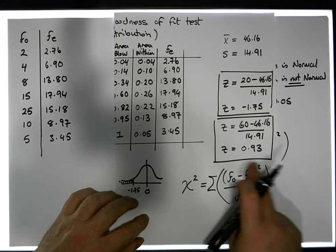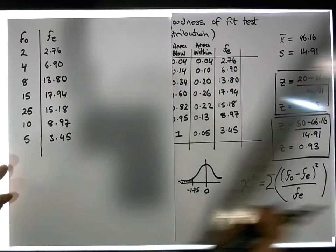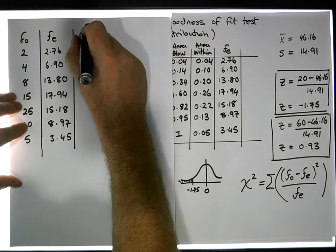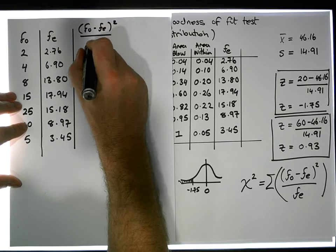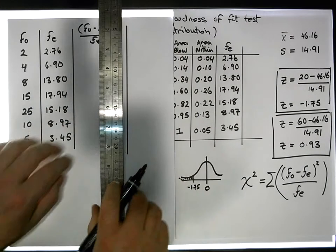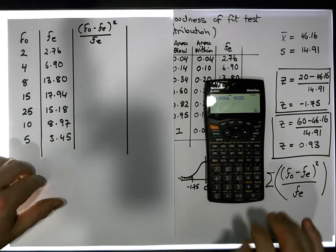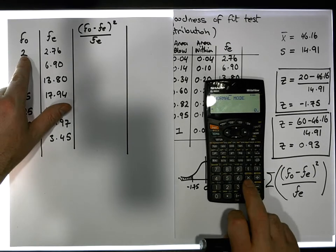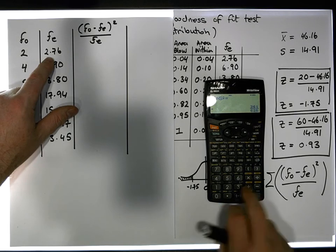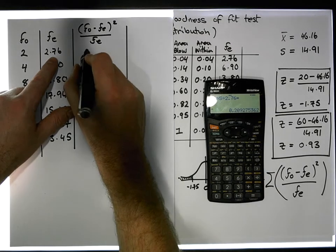I'm going to do this whole calculation for each pair of observed and expected values — calculating what the observed minus the expected is, squared, relative to the expected. The first calculation is 2 minus 2.76, squared, divided by 2.76, which gives us, to two decimal places, 0.21.